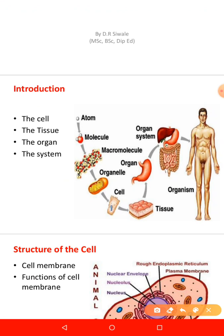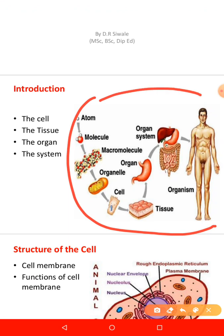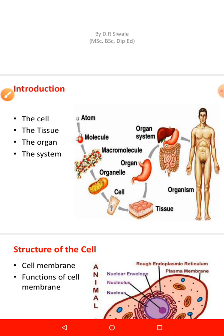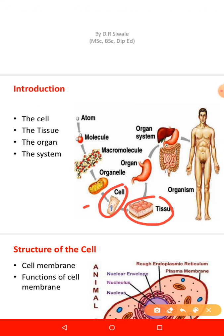This diagram shows the organization of the human body from a physiological point of view. The functional unit is the cell, and a group of cells forms what we call a tissue. A group of tissues forms an organ, and when you put organs together they form an organ system, and organ systems together form an organism.